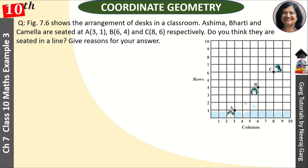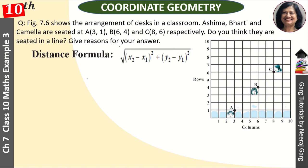Okay, 3 points are given — A, B, C — 3 coordinates. Now, are all 3 sitting in a line? So what do we need to do? If we have points A, B, C and need to check if they form a line, we need to use the distance formula.